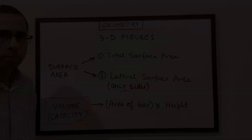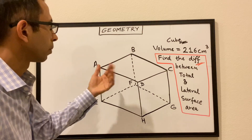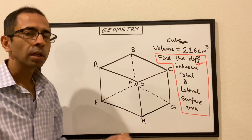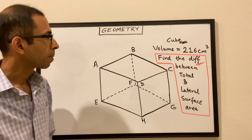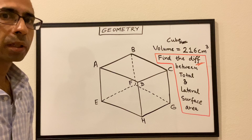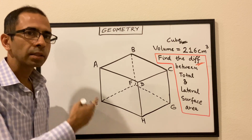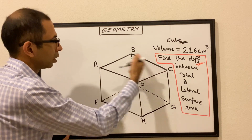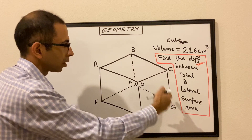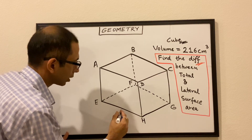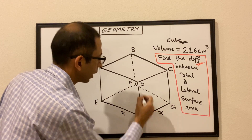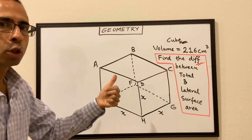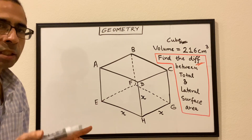Let's take up some questions now. We have a cube. The volume of the cube is given as 216 cubic centimeters and we have to find the difference between the total surface area and the lateral surface area of this cube. A cube is a three-dimensional shape in which the three sides — length, width, and height — are the same. So let's say the base of the cube has the top and four edges, and each of these sides — the length, width, and height — is x, since all of them are the same for a cube.